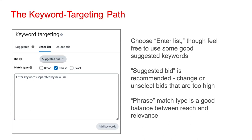If you were to target your ad to keywords instead of categories, you'd have to specify those keywords. I recommend you select 'enter list,' which gives you the option to put in a lot more keywords. I recommend you go with the suggested bid. If a certain bid seems high, you can change the bid or simply unselect it and not target that keyword. With keyword targeting, you're also going to be asked to input a match type.